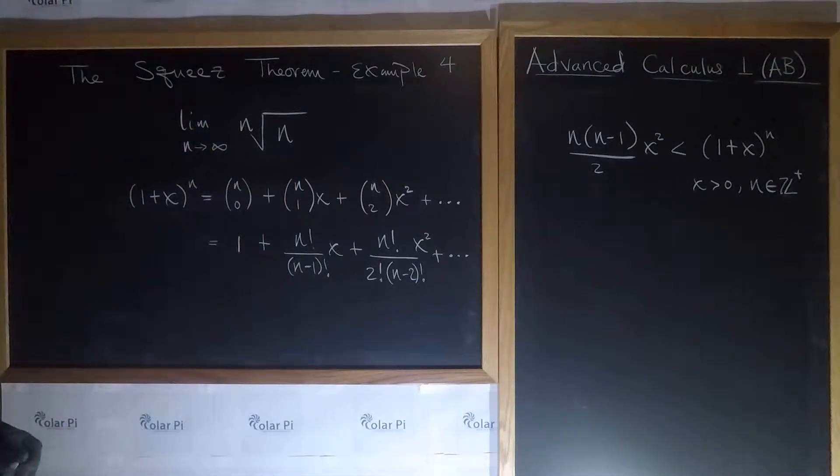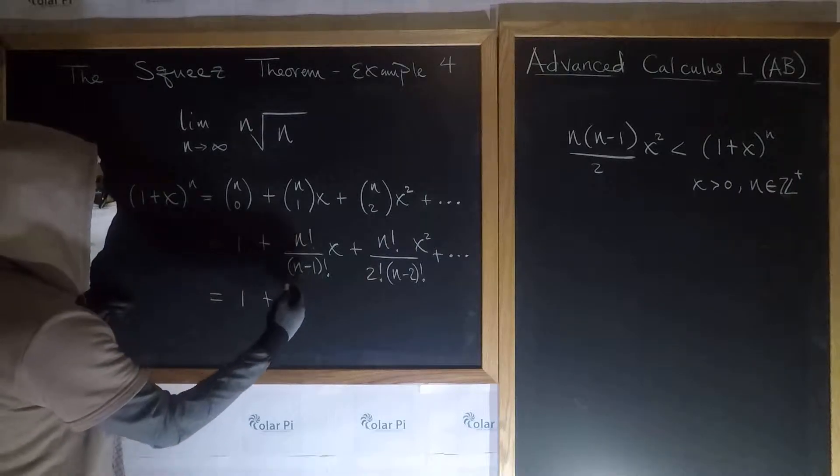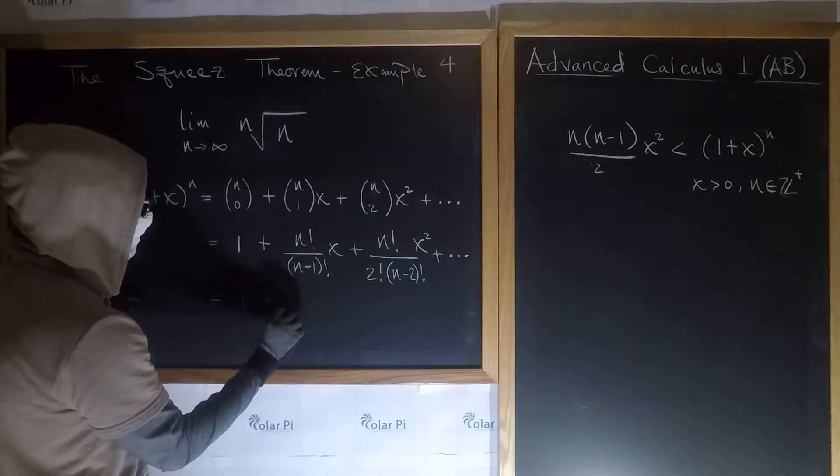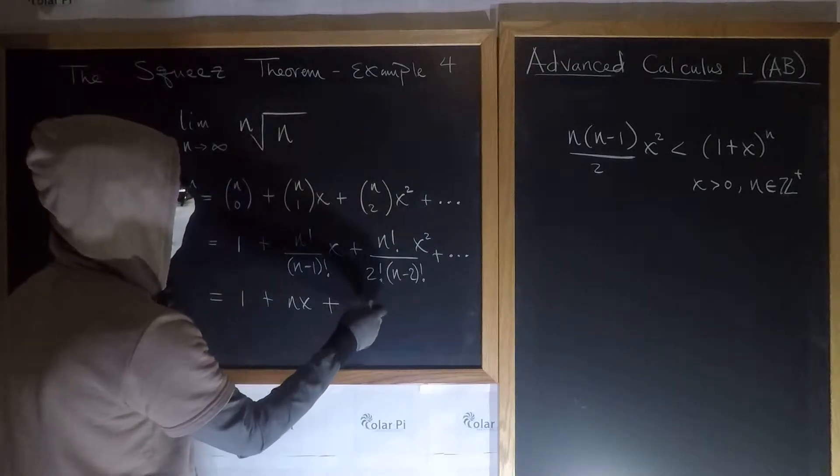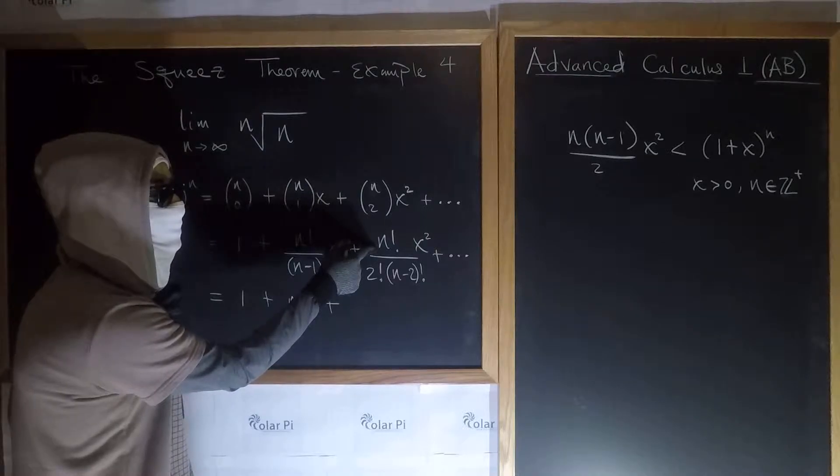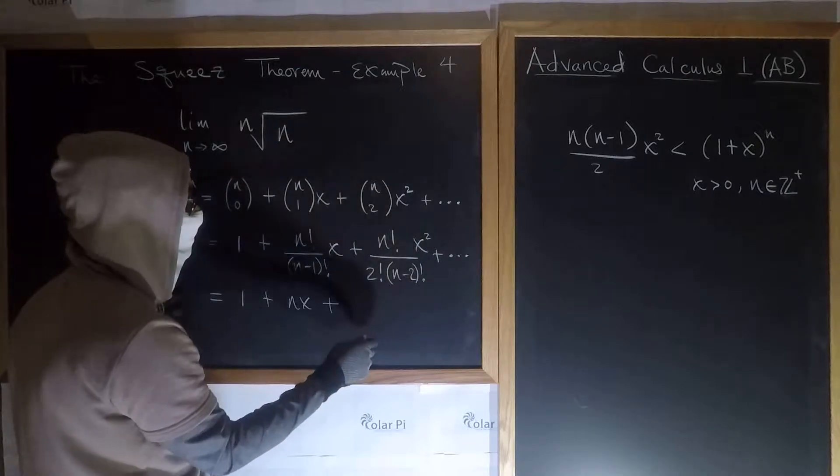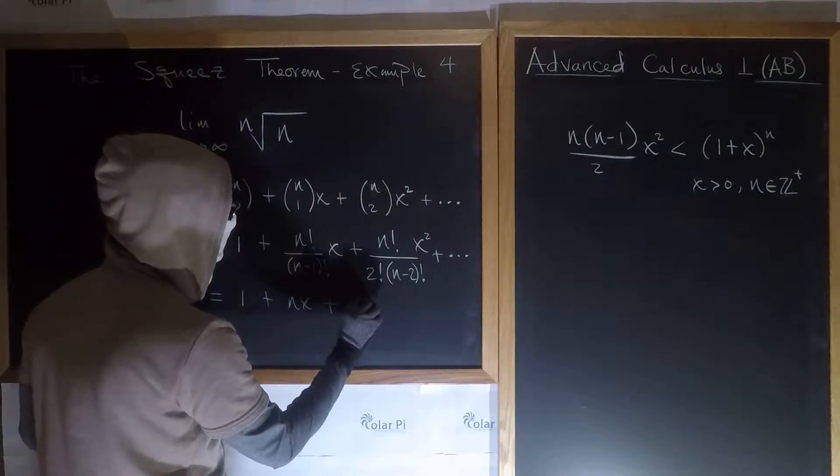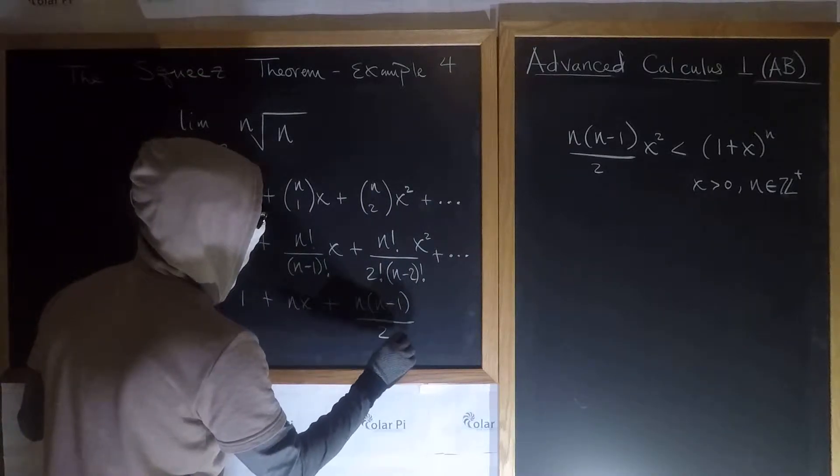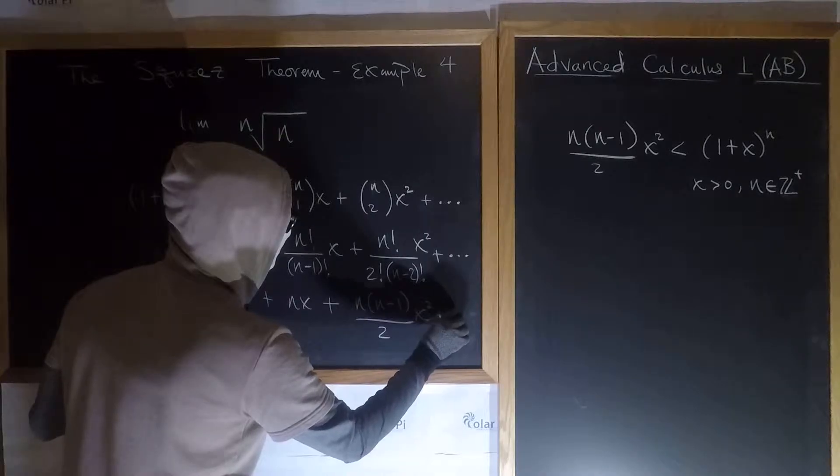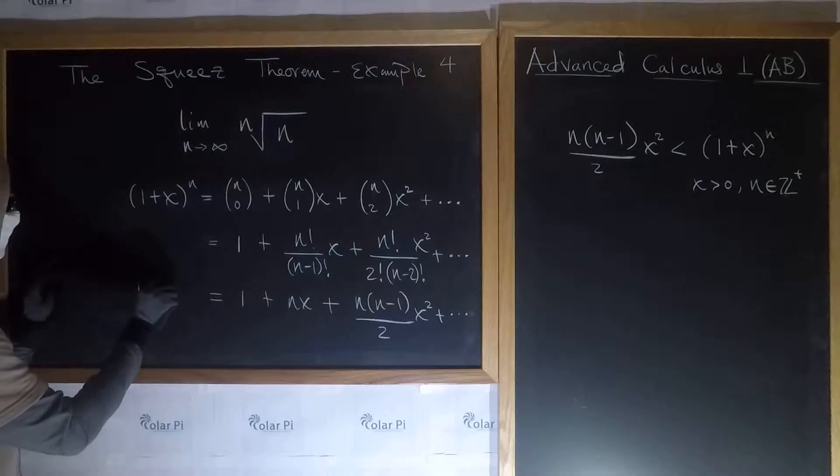But as I said, we don't need them. Now clearly, 1 is 1, and then n factorial over n minus 1 factorial is n, and then so we have n times x, and then plus this here. Well, n factorial is n times n minus 1 times n minus 2 factorial, so canceling the n minus 2 factorial in the numerator, in the denominator, we can write the numerator as n times n minus 1, and then obviously 2 factorial is just 2 over 2 x squared plus dot dot dot, right?